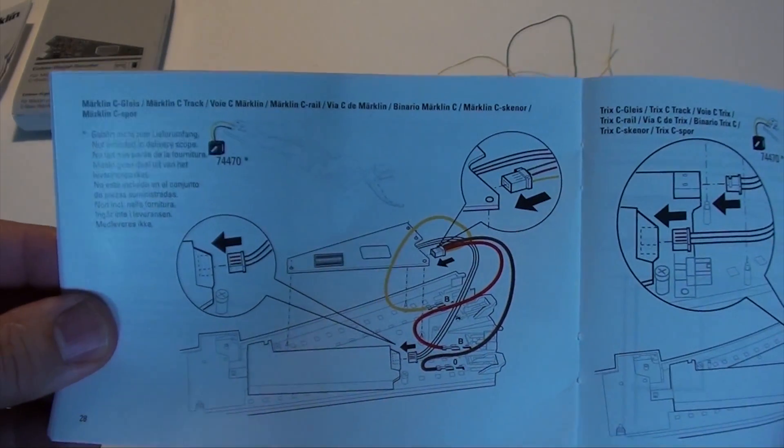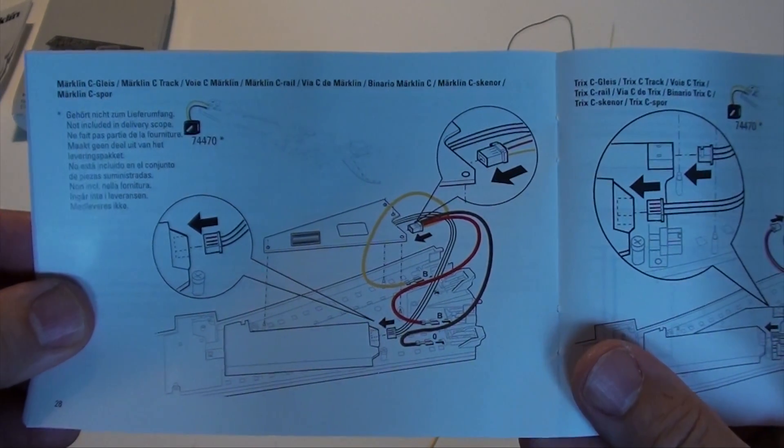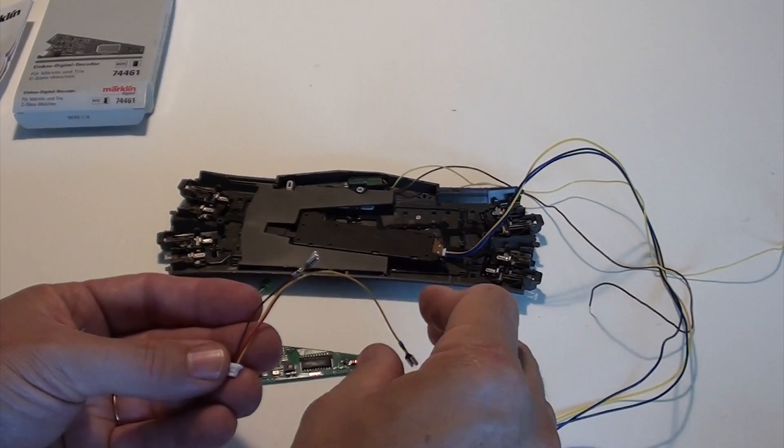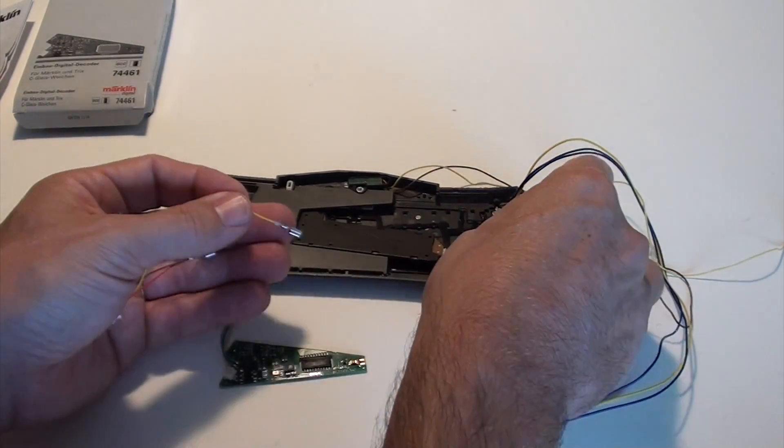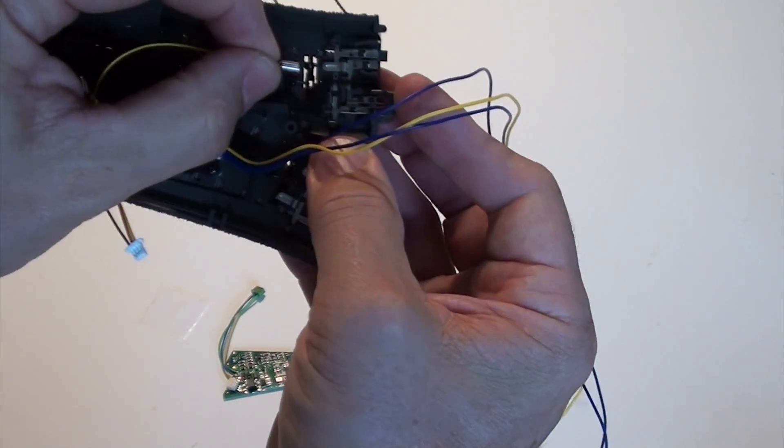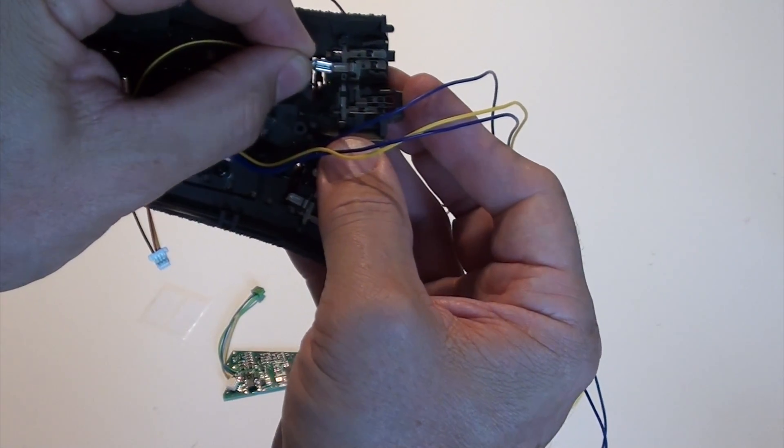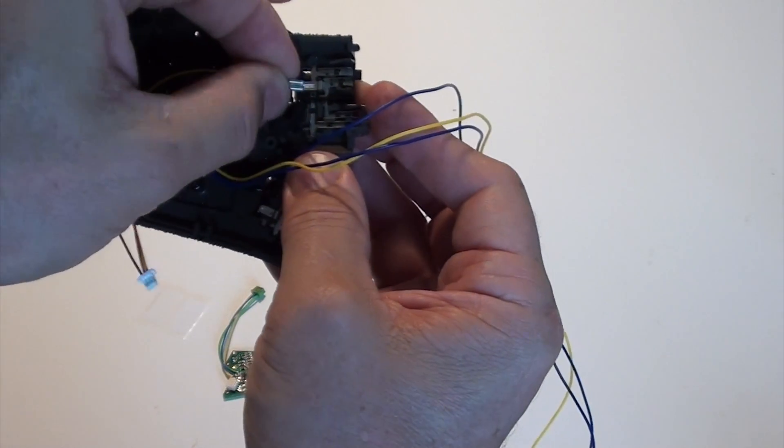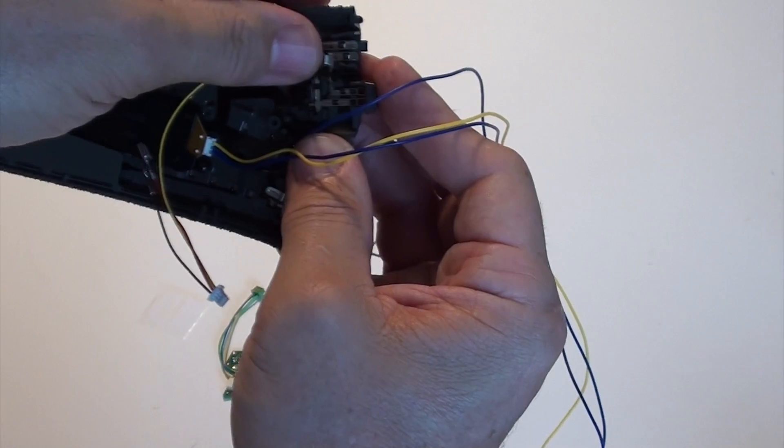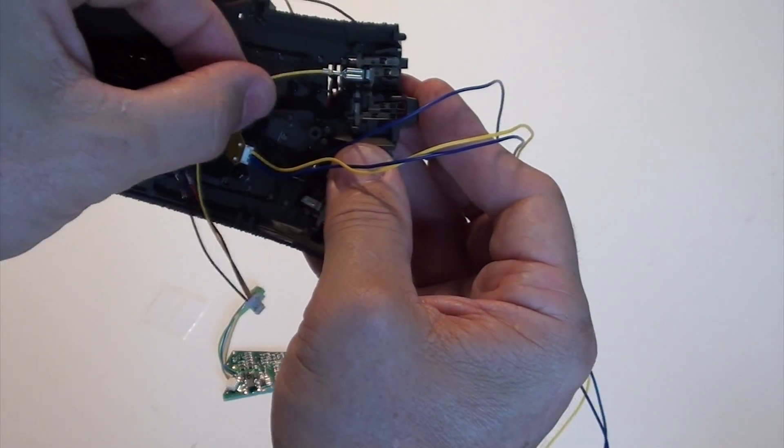The instruction booklet has a nice diagram that shows you how to hook up the yellow, red and brown wires. The yellow wire is a bit longer. It is for the power supply to the turnout motor. And it goes to the little lip on the turnout branch. You see that here on the bottom of the track. There is only one contact on the turnout branch of the turnout.